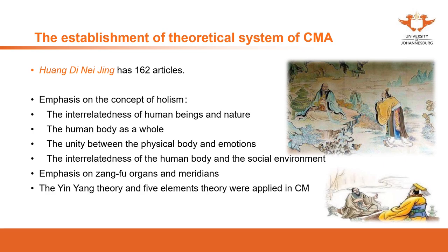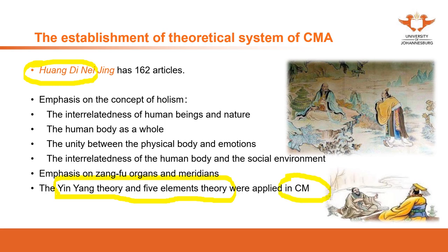The yin and yang theory and the five elements theory were not developed specifically from Chinese medicine — they were developed in philosophy. Philosophers used these theories to analyze and explain phenomena in nature and society. In the Huangdi Neijing, it was proposed that we can apply these theories to Chinese medicine, which represents one of the most significant improvements in medical science.